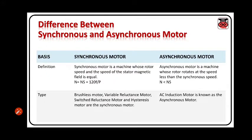The first parameter is definition. The synchronous motor is a machine whose rotor speed and the speed of stator magnetic field is equal. Whereas an asynchronous motor is a machine whose rotor rotates at a speed less than the synchronous speed.